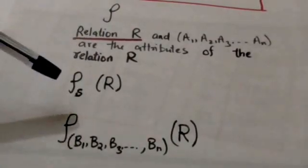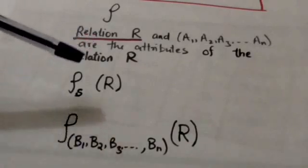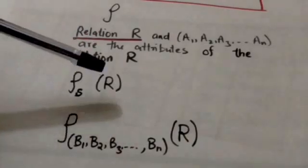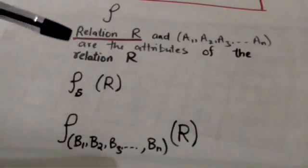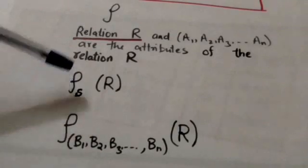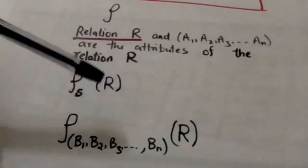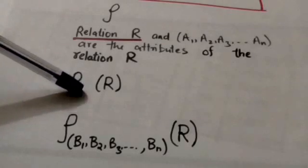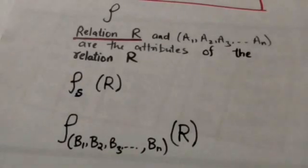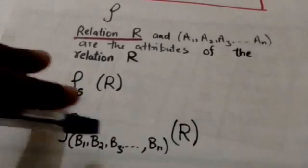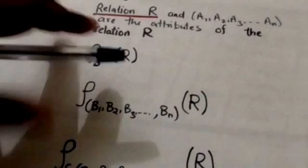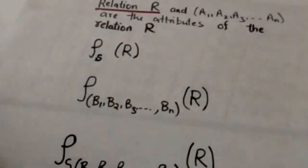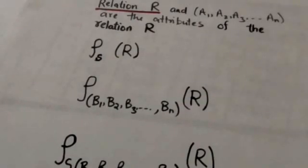This expression will change the name of relation R — the name of relation R will be changed to S. This next expression will change the name of the attributes of relation R.